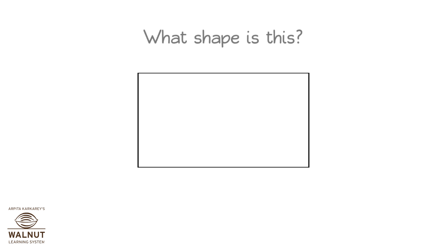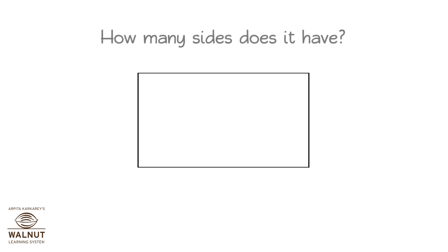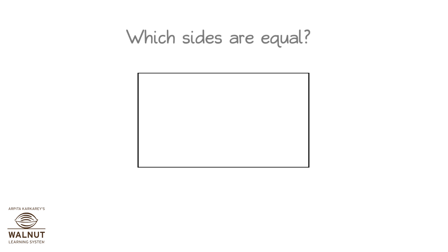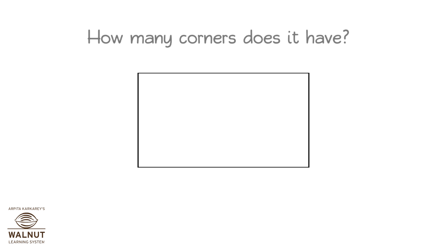What shape is this? Rectangle. How many sides does it have? Four. How many corners does it have? Four. Which sides are equal? Opposite sides. How many corners does it have? Four.